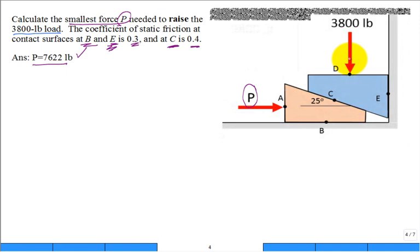In order for this top wedge to move upward, what does the bottom wedge do? Does it move to the right or to the left? It moves to the right, doesn't it, such that this top wedge moves up and it lifts the load of 3,800 pounds.